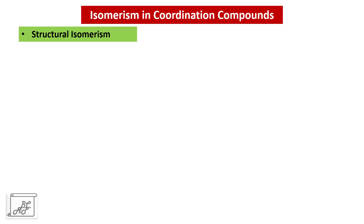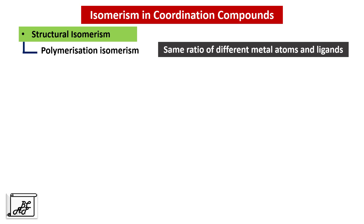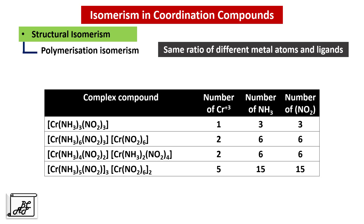Let's move to the next type: Polymerization Isomerism. In the first case there is one chromium atom, three ammonia molecules and three nitro molecules. In the second case there are two chromium atoms, six ammonia and six nitro molecules. The third has one chromium with six ammonia and six nitro, and the last has five chromium atoms with 15 ammonia and 15 nitro molecules. In all cases the ratio of chromium to ammonia to nitro remains 1:3:3. They have the same ratio of metal to ligand but represent different polymeric structures of coordination compounds — this is Polymerization Isomerism.